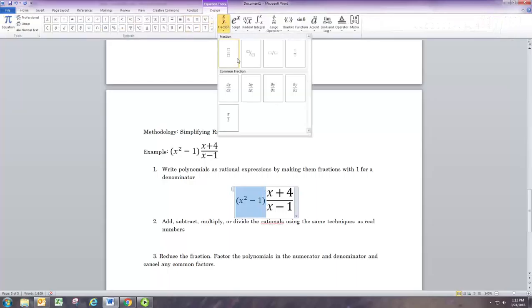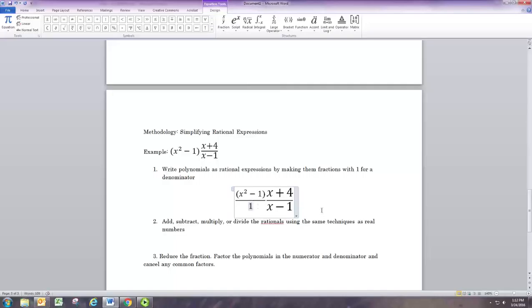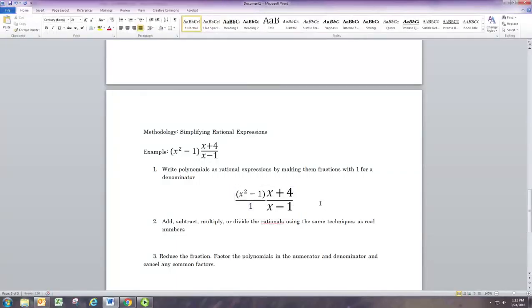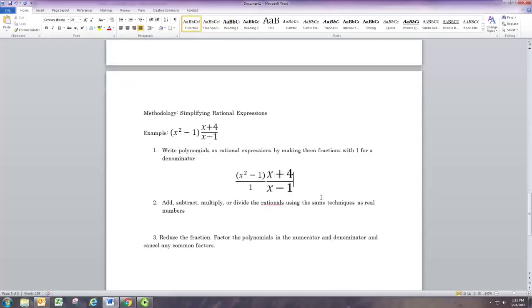So anything can be written as a fraction over 1, right? Whole numbers over 1, polynomials over 1 become rationals. Now what's the rule for multiplying? Multiplying is pretty easy with fractions. You just multiply the numerators and multiply the denominators.